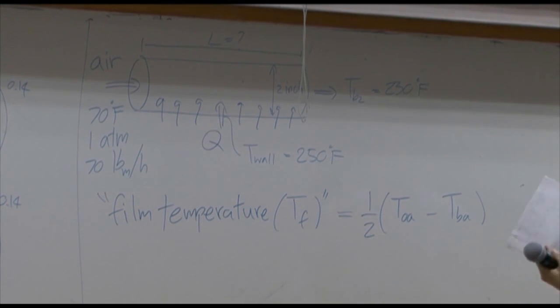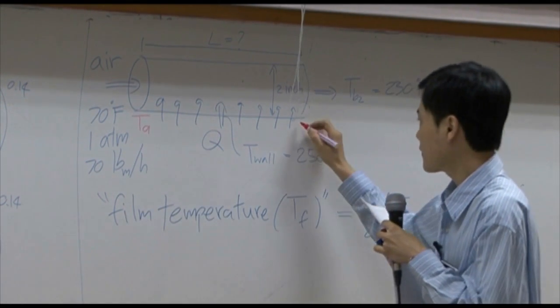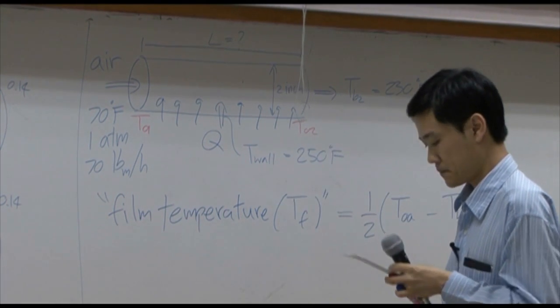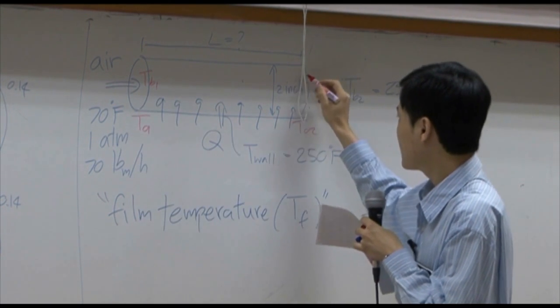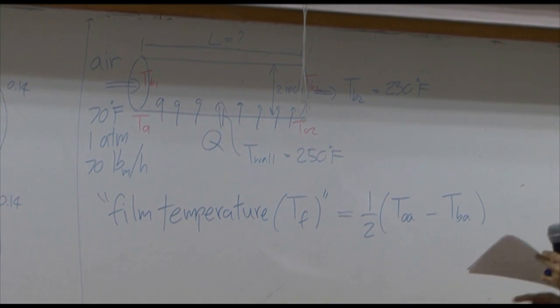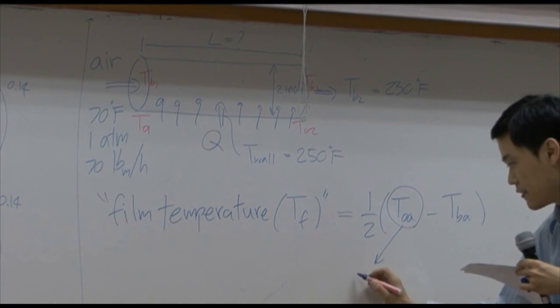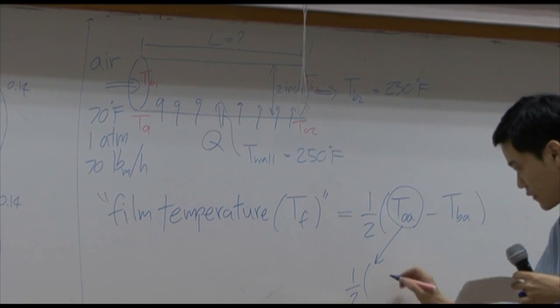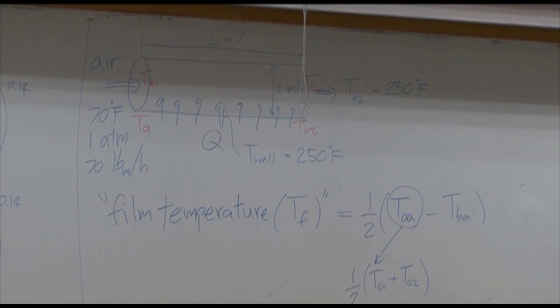So if the temperature of the wall here is T01, out here is T02. Temperature of the bulk for inlet is TB1 and down here is TB2. T0a is average number between these two numbers. So that we can calculate T0a from half of T01 plus T02.